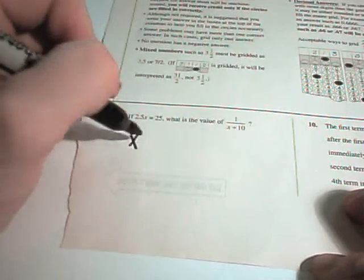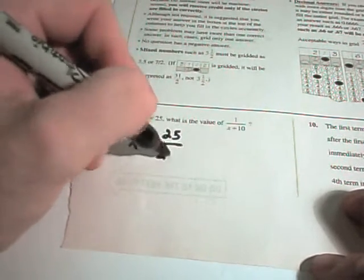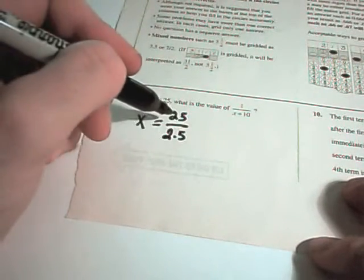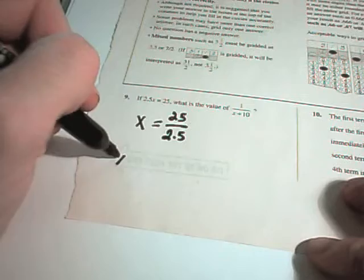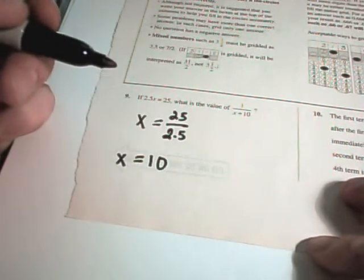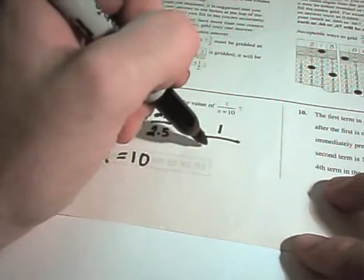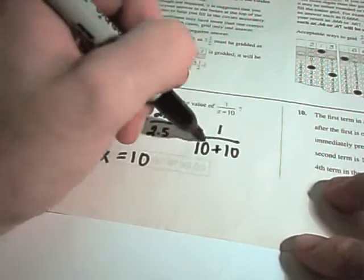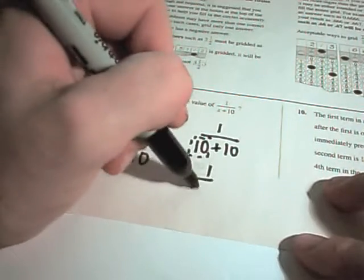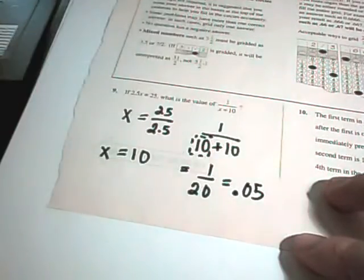Alright, the next few problems are these free response questions. So in 9, it says if 2.5x equals 25, what is the value of 1 over x plus 10? Alright, easy enough. I'm just going to solve this first one for x. So we'll get x equals 25 over 2.5. And 2.5 goes into 25 ten times. So, what is the value of 1 over x plus 10? It would be 1 over 10 plus 10, because now I know my x value. Which is 1 over 20, or as a decimal, is 0.05.